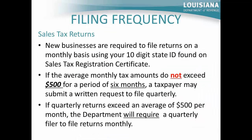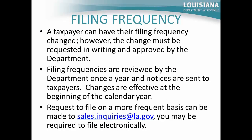Upon completing the registration process, here is information on the return filing frequencies. New businesses are required to file returns on a monthly basis using your 10-digit state ID number found on the sales tax registration certificate. If the average monthly tax amounts do not exceed $500 for a period of six months, a taxpayer may submit a written request to file quarterly. If quarterly returns exceed an average of $500 per month, the department will require a quarterly filer to file returns monthly. A taxpayer can have their filing frequency changed; however, the change must be requested in writing and approved by the department. Filing frequencies are reviewed by the department once a year and notices are sent to taxpayers. Changes are effective at the beginning of the calendar year.